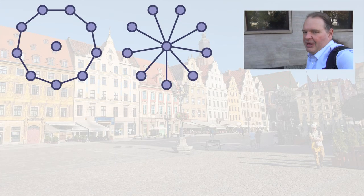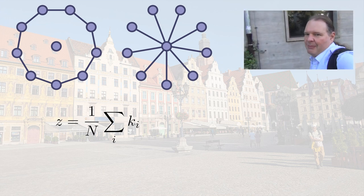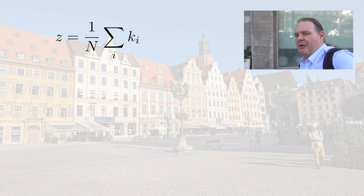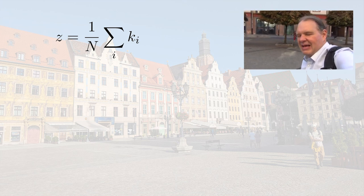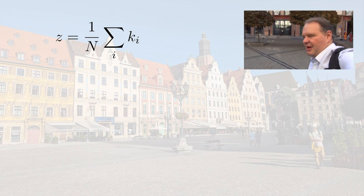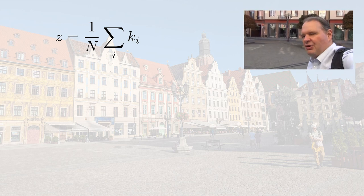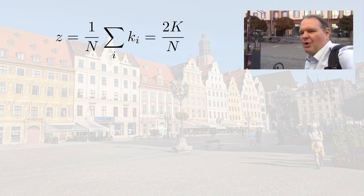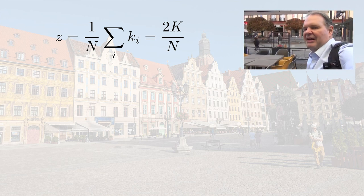But is Q plus 1 really different from the mean degree z of the network? Let's study this in two abstract networks. If we wanted to compute the mean degree, we could sum up the degrees of all nodes and divide by the number of nodes. We can actually replace that sum in the numerator by twice the number of links, since every link is counted twice. So the mean degree z equals two times the number of links k, divided by the number of nodes n.